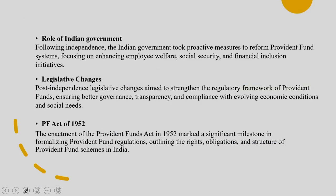When you look into the Employees' Provident Fund scheme, the role of the Indian government was critical. It took proactive measures to reform the provident fund systems, focusing on enhancing employee welfare, social security and financial inclusion. Post-independence, there have been legislative changes which strengthened the regulatory framework of the PF, ensuring better governance, transparency and compliance with evolving economic conditions and social needs. The 1952 Act was a turning point - it marked a significant milestone in formalizing provident fund regulations, rights, obligations and the structure of provident fund schemes.